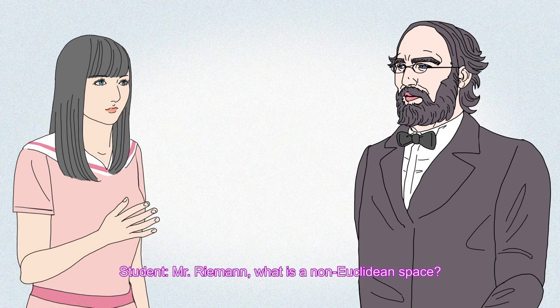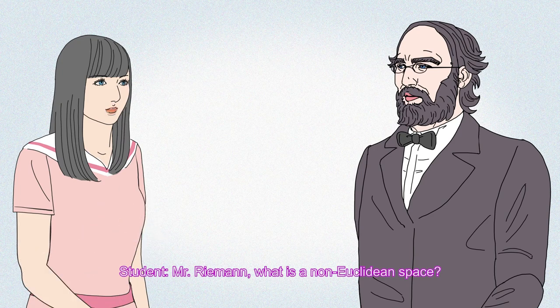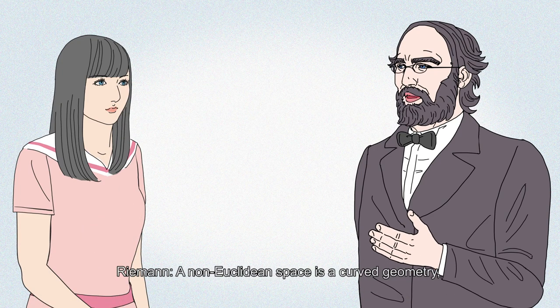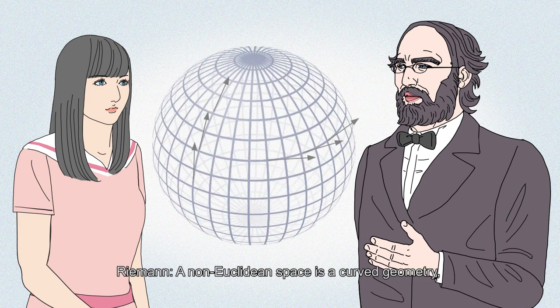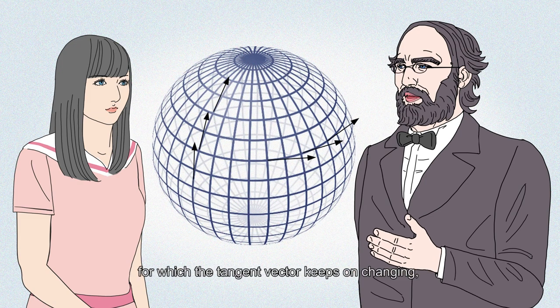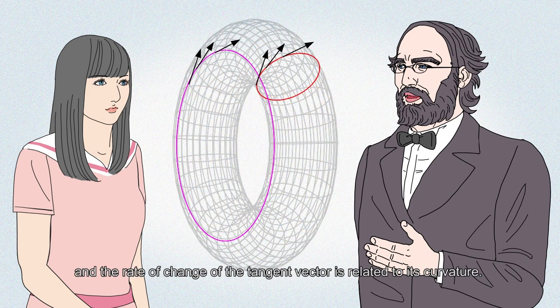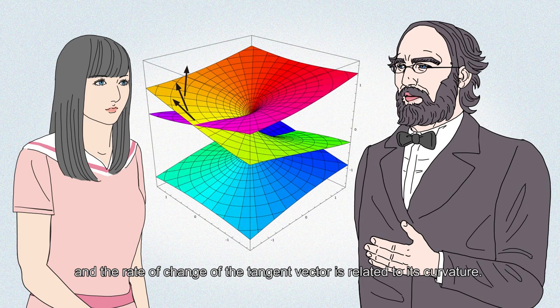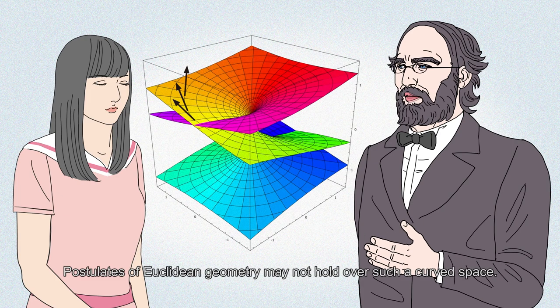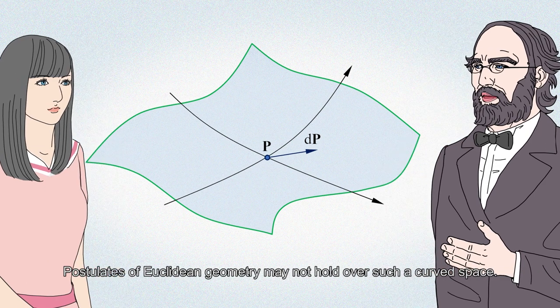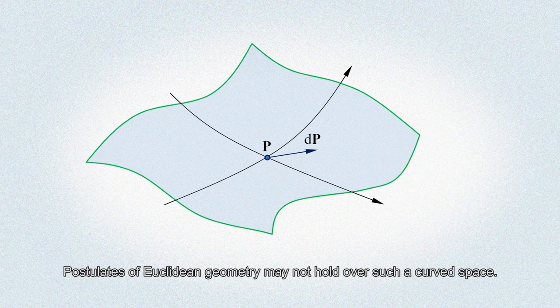Mr. Riemann, what is a non-Euclidean space? A non-Euclidean space is a curved geometry for which the tangent vector keeps on changing, and the rate of change of the tangent vector is related to its curvature. Postulates of Euclidean geometry may not hold over such a curved space.